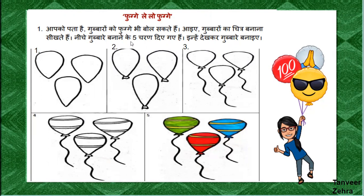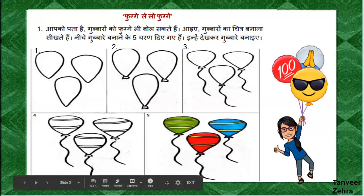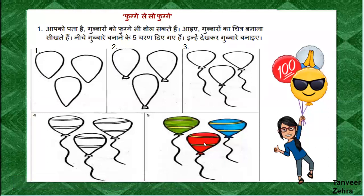5 steps have been provided to draw Gubbareo. In the first step, only the basic shape has been completed. In the second step, this guard shape has been drawn. Then in the third step, a dhaga (string) has been made. In the fourth step, a design has been made. So you will also make the guard in this step.